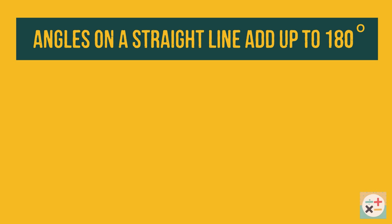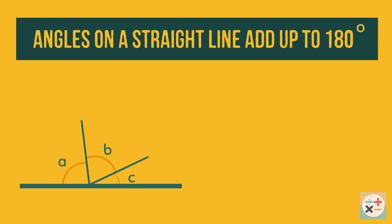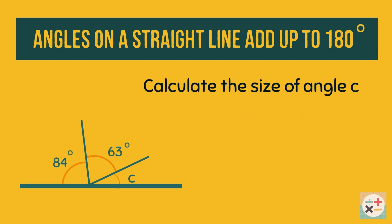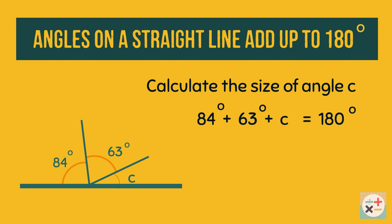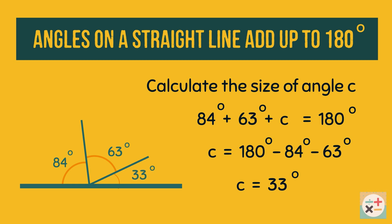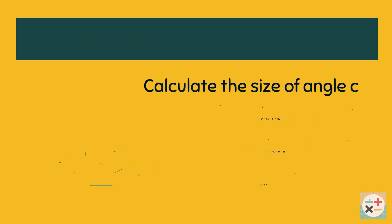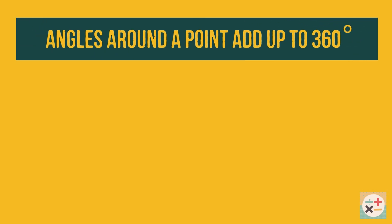The next rule is that angles on a straight line will always add up to 180 degrees. The next rule is that angles around a point add up to 360 degrees.